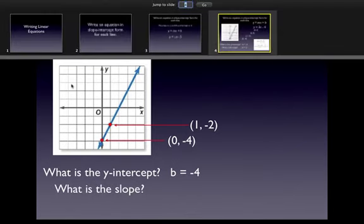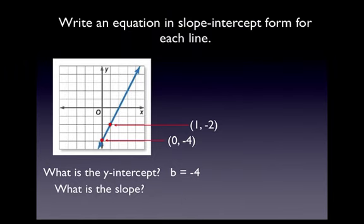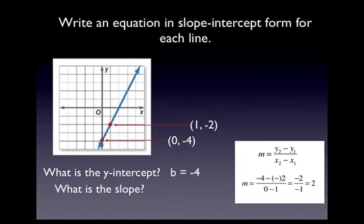Next, what is the slope? Well, let's take two of our pairs and plug them into our formula for m, or slope. So we have negative 4 minus negative 2 over 0 minus 1. That becomes negative 2 over negative 1, which is equal to 2. Therefore, our slope is 2.